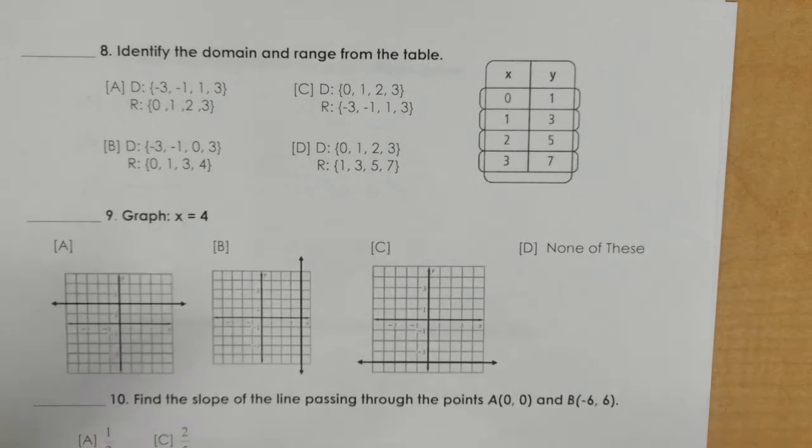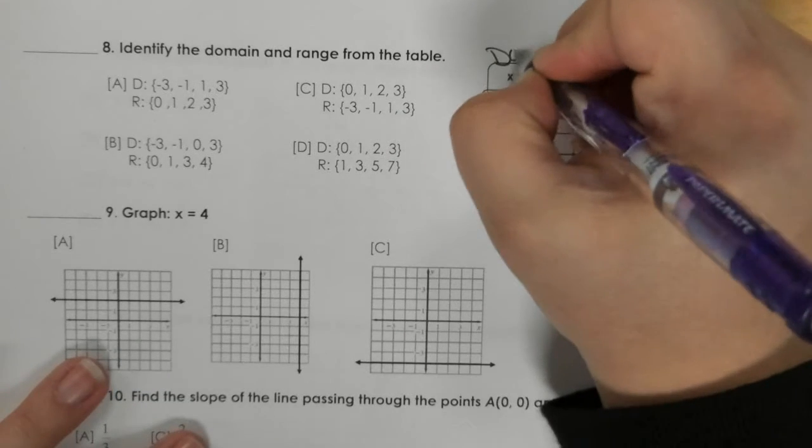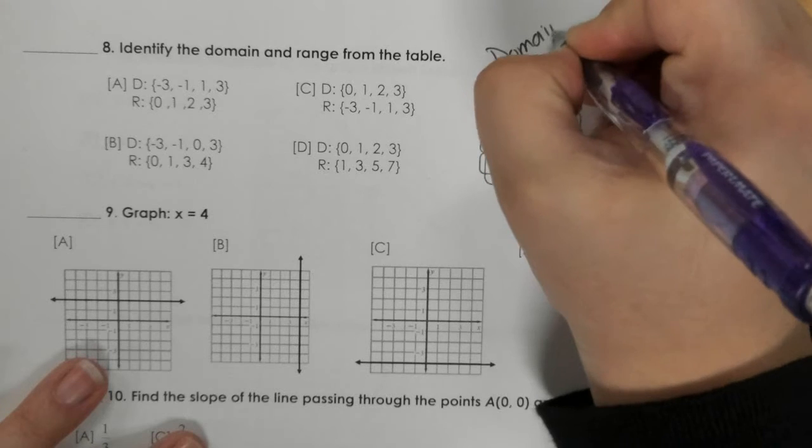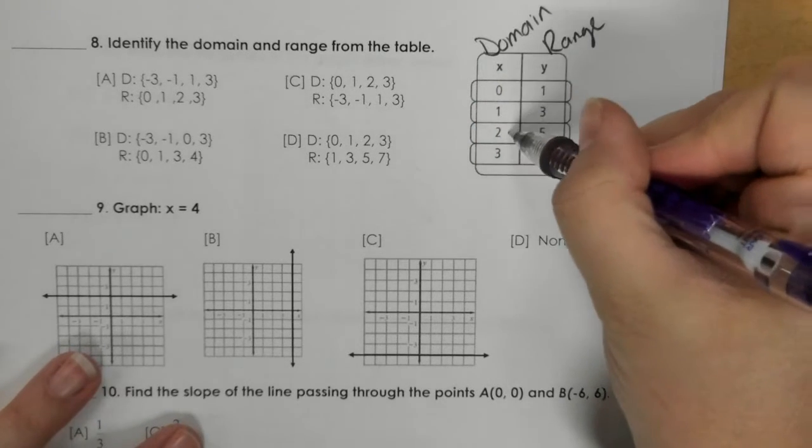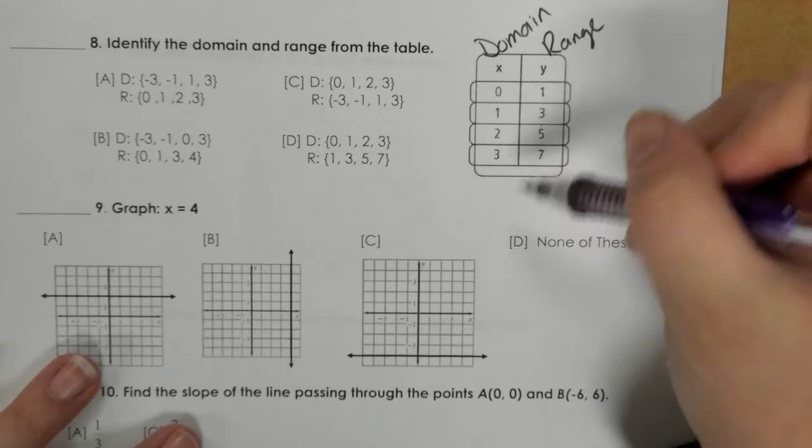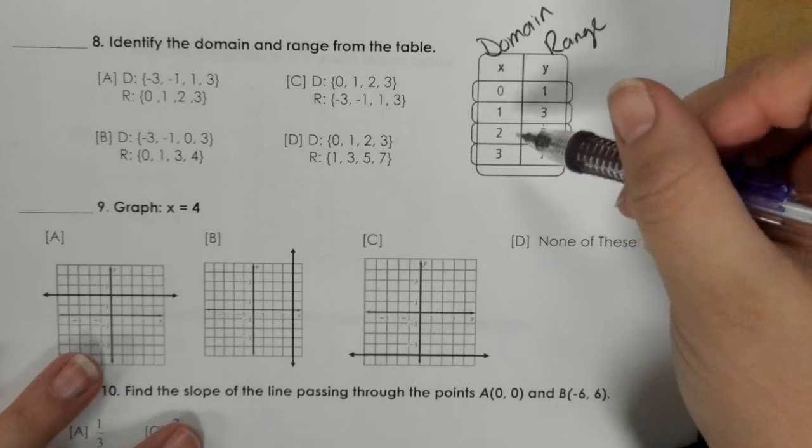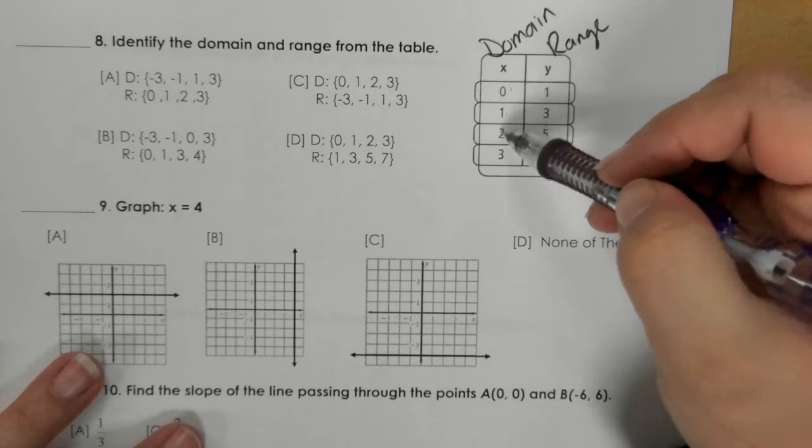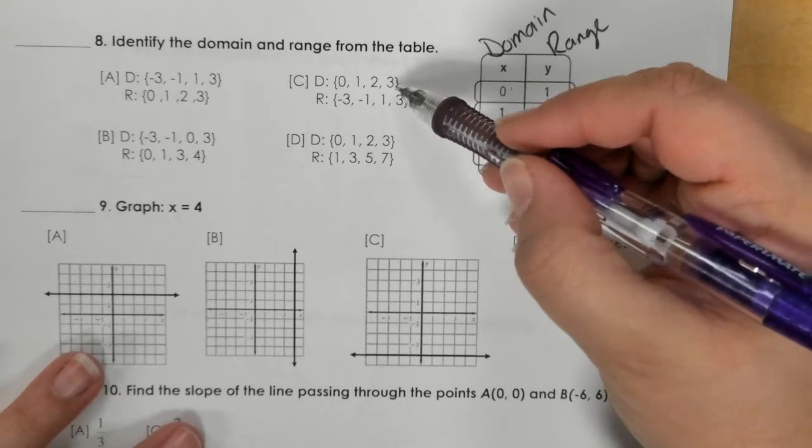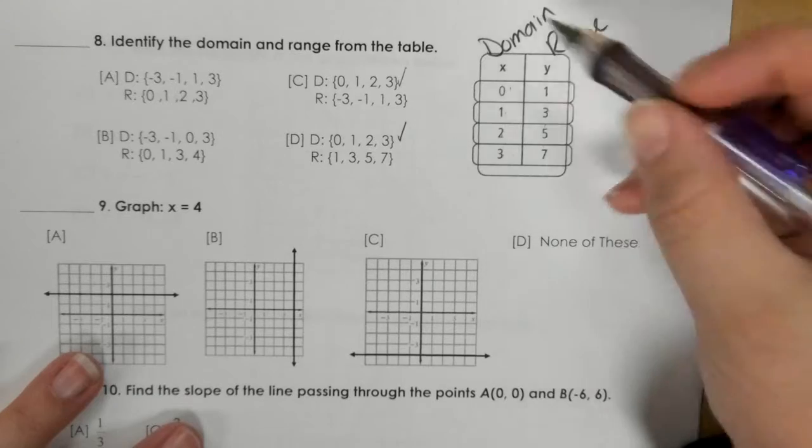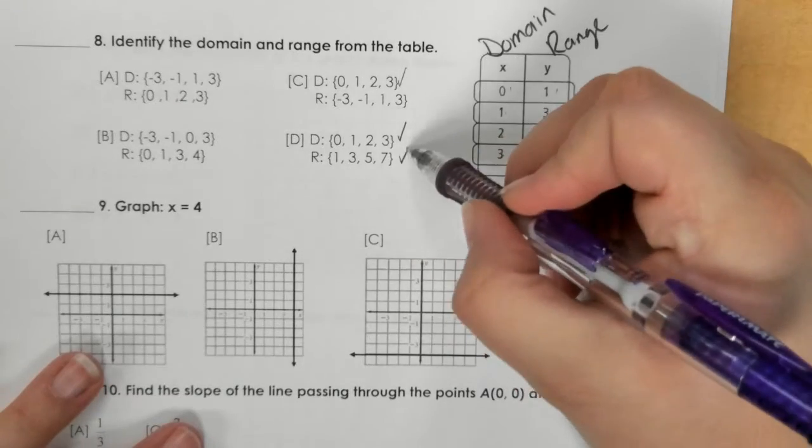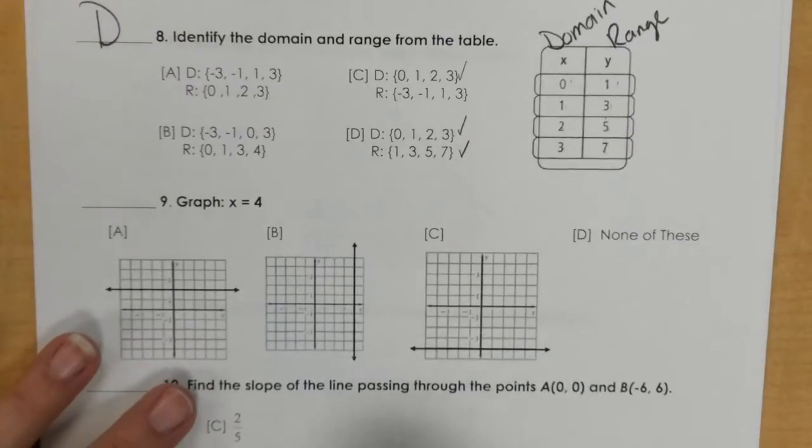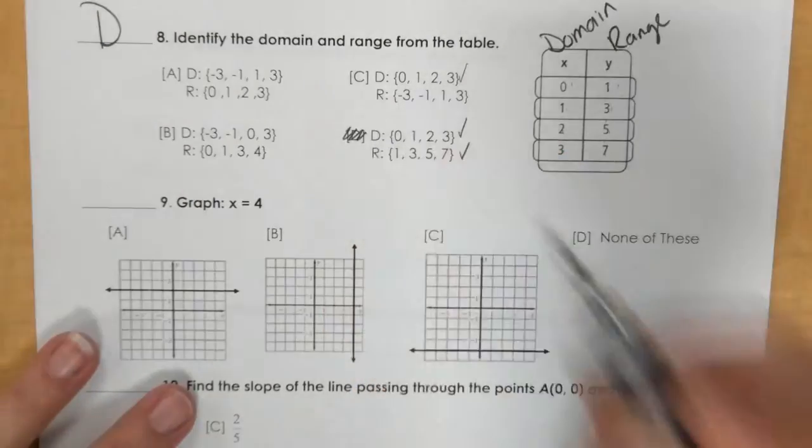Number 8, domain and range. This is your domain and the range is your y, and they're already in order from least to greatest here which is pretty nice. If they're not, you would need to put them in order least to greatest. So I'm looking for 0, 1, 2, 3, which both of these have that. And then I need 1, 3, 5, 7, but only this one has those numbers, so D is my solution.